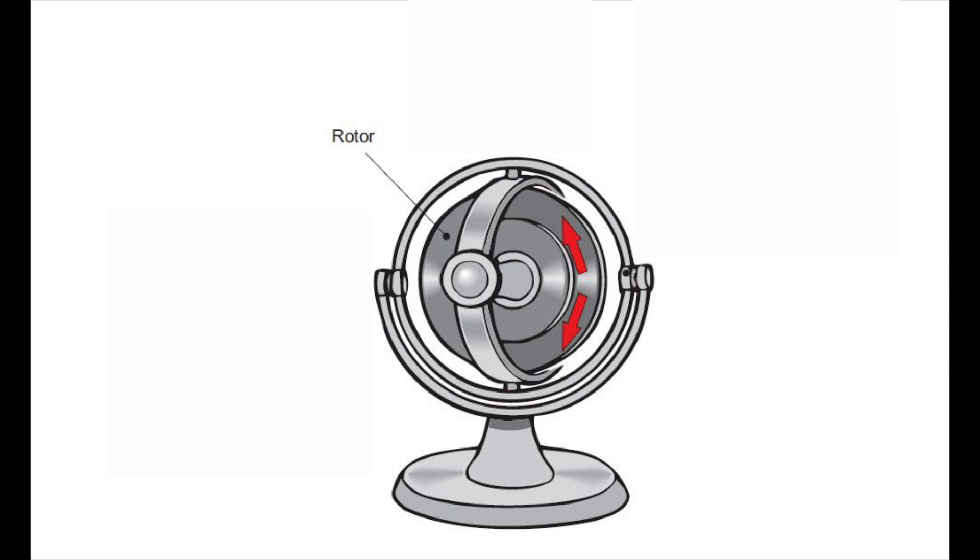A traditional gyroscope has a spinning central core, also known as the rotor, mounted on a shaft. The gyroscope sits on a gimbal frame that allows it to spin and move on different planes.